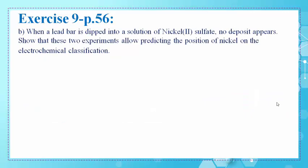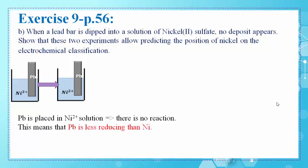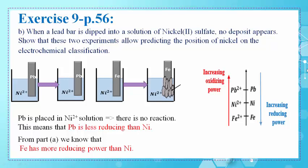In part B, when a lead bar is dipped into a solution of nickel sulfate, no deposit appears, meaning no reaction takes place. This means that Pb is less reducing than Ni. From part A, we know that a reaction takes place between Fe and Ni2+, so Fe is more reducing than Ni. Since Pb is less reducing than Ni, we place it above Ni on the electrochemical classification axis, since reducing power increases downwards.